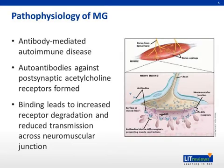The underlying pathophysiology in MG is a result of autoantibodies against the postsynaptic acetylcholine receptors. Acetylcholine is the neurotransmitter involved in neuromuscular transmission. Binding of the autoantibody to the acetylcholine receptors, as shown in the illustration, leads to increased receptor degradation and hence decreased transmission across the neuromuscular junction.